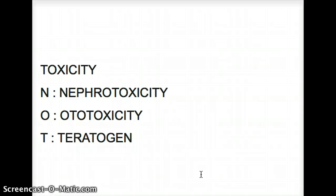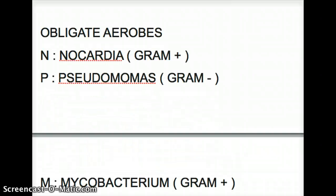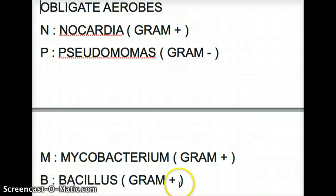I quickly wanted to talk about the obligate aerobes, because we should know which are the obligate aerobes and which are gram-negative, so we have a clear understanding of which organisms aminoglycosides can work on. There's a mnemonic — I know I talk about a lot of mnemonics, but that's how I learned it. The mnemonic is: 'Nagging Pests Must Breathe.' N for Nocardia, P for Pseudomonas, M for Mycobacterium, and B for Bacillus. These are all obligate aerobes, which means they must need oxygen to survive.